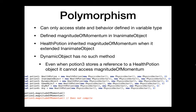This is where polymorphism comes from — poly meaning many, morph meaning form. A health potion in this example has many forms. It can be a DynamicObject, it can be an InanimateObject, it can be any one of those types as needed. Except we lose a little bit when we do this. Recall that we had the magnitudeOfMomentum method built in the InanimateObject class — so when we have anything of type InanimateObject, we can call that method.